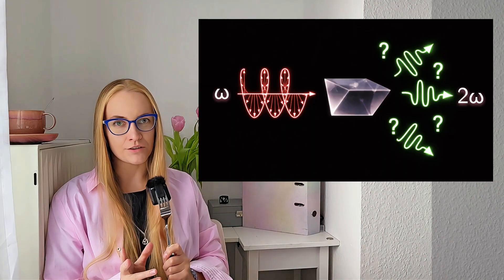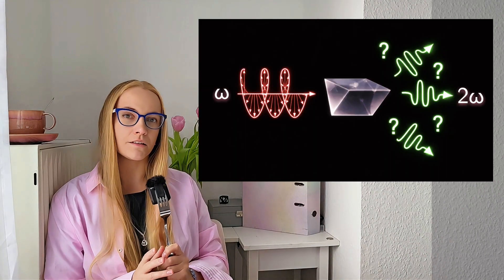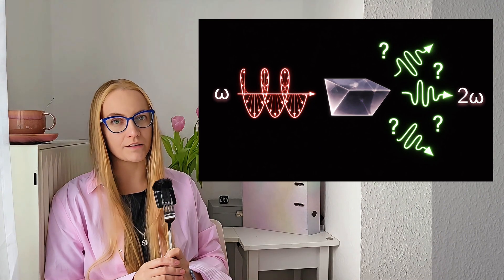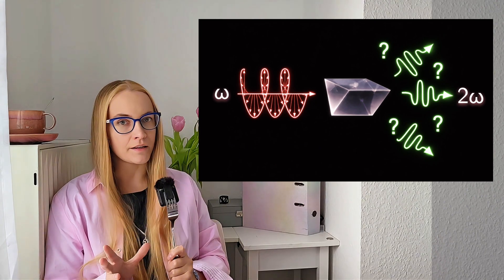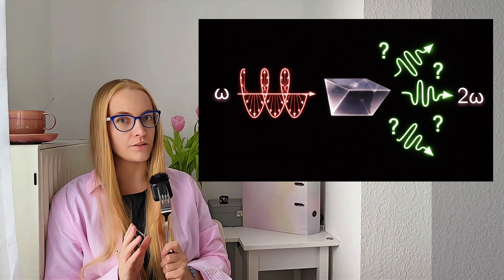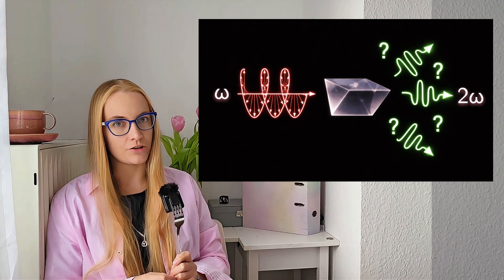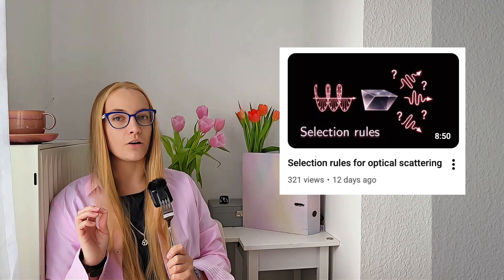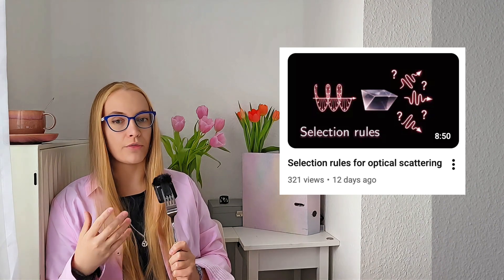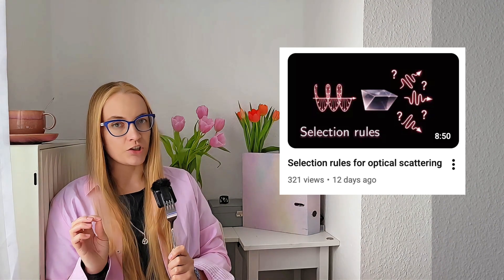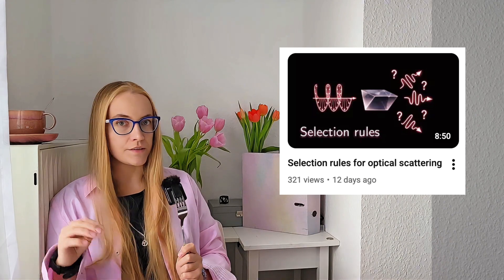In this video I will mostly talk about my own scientific results for the first time. They concern selection rules for the second and higher harmonic generation in dielectric nanostructures, so one can predict the symmetry of the generated harmonic signal without solving any equations. To understand this video you need to know what second harmonic generation is and also the selection rules for the usual linear scattering which I discussed in previous videos.